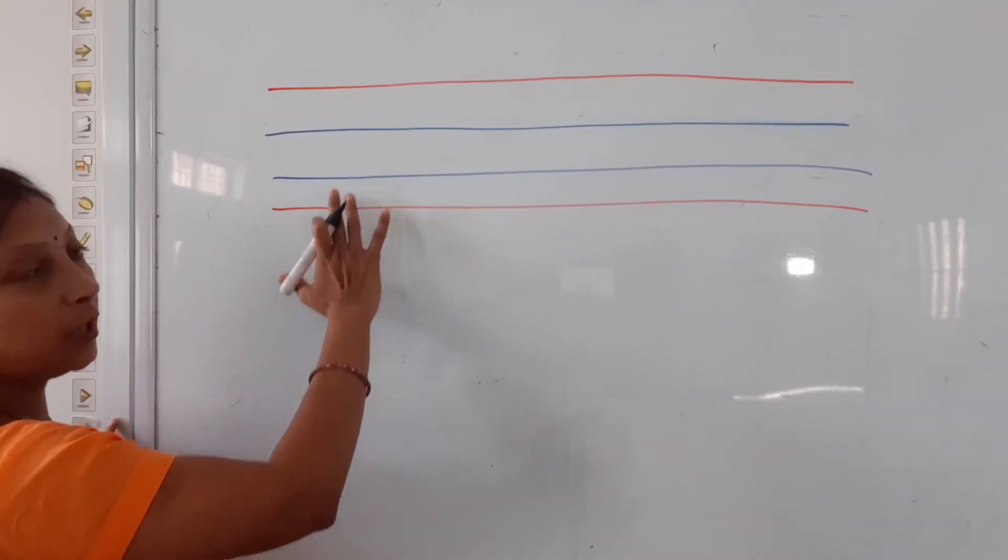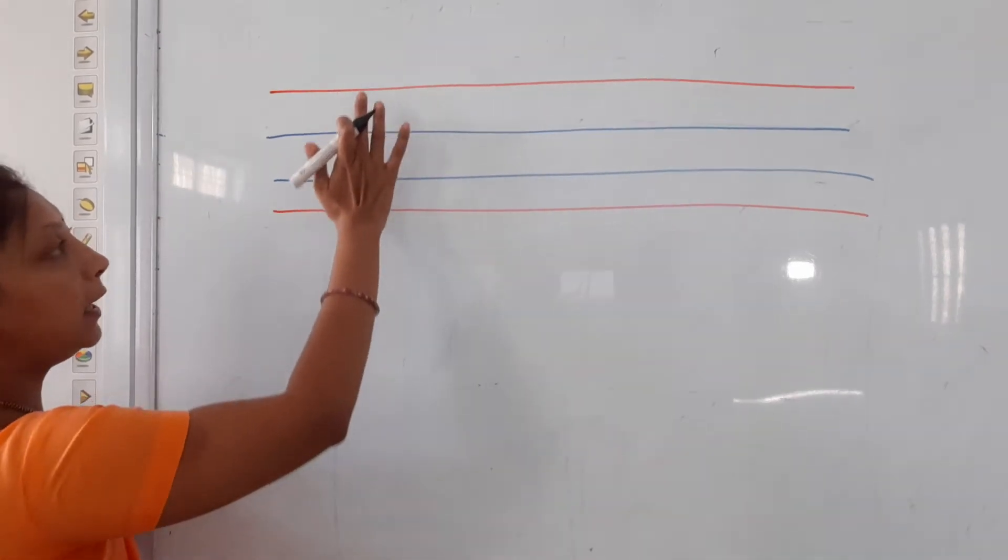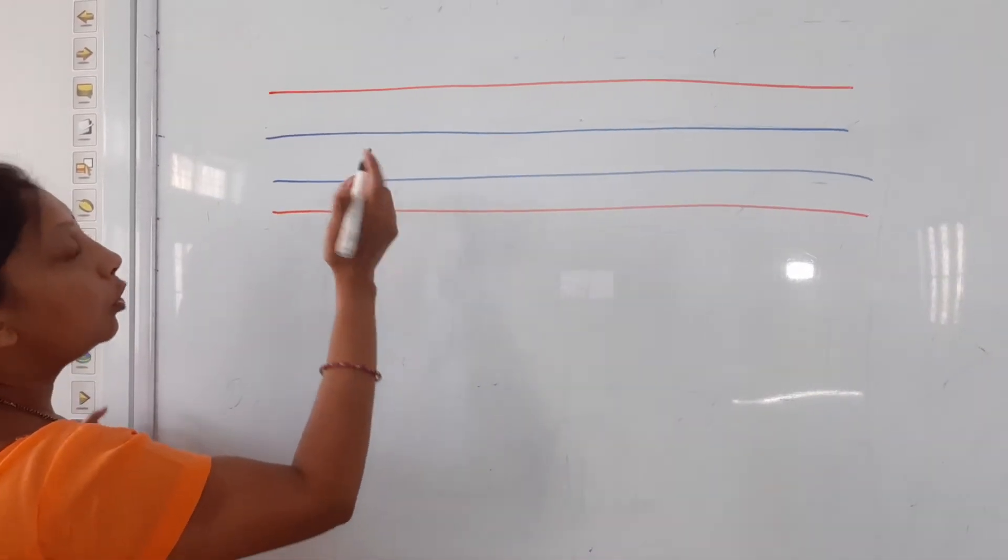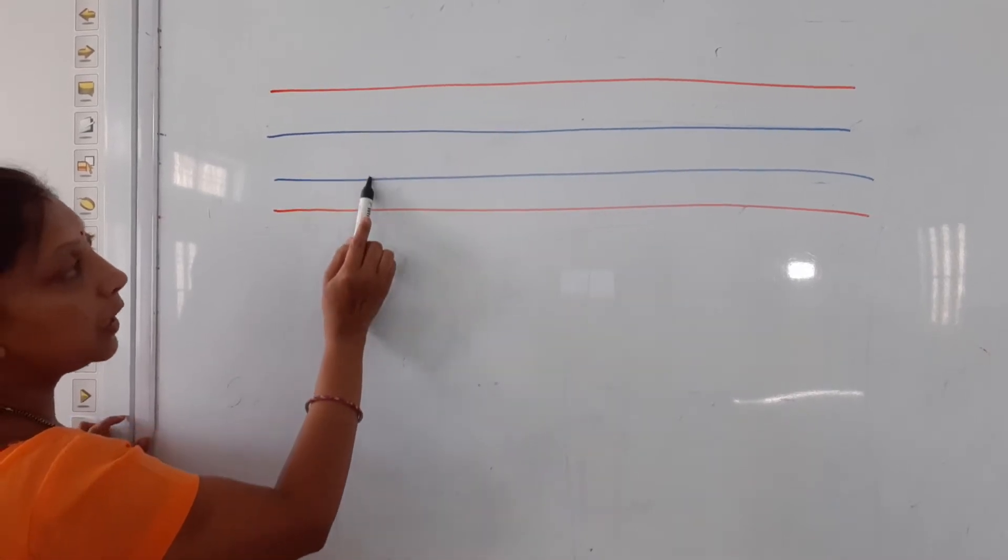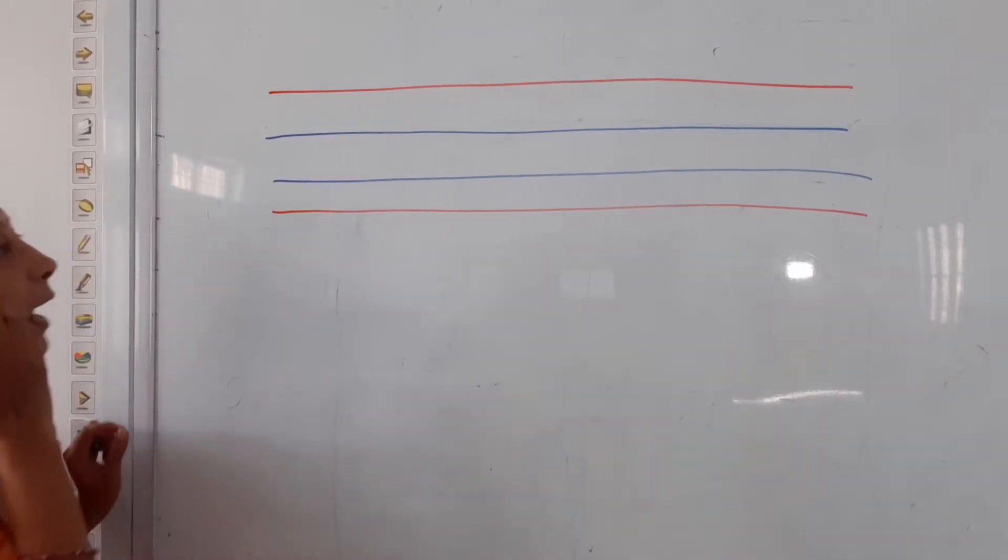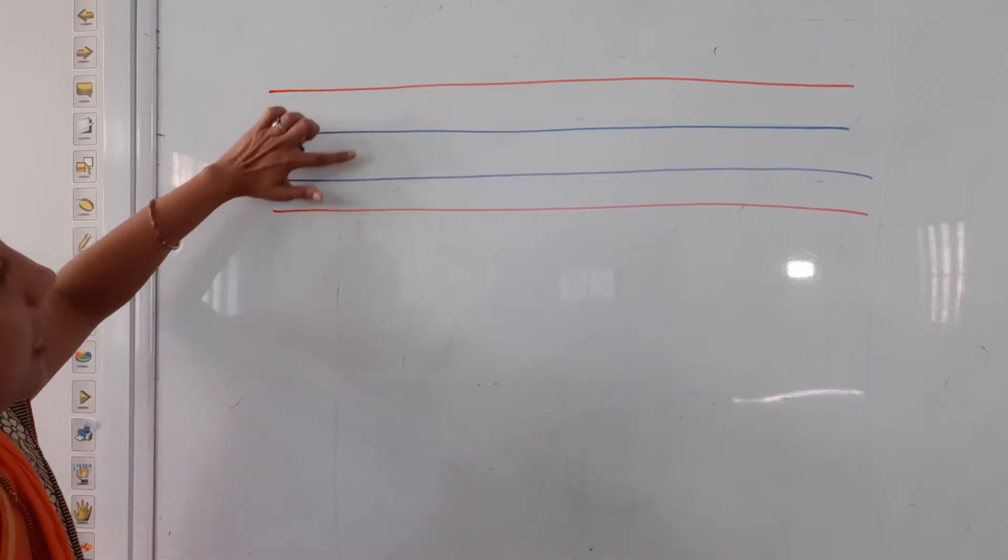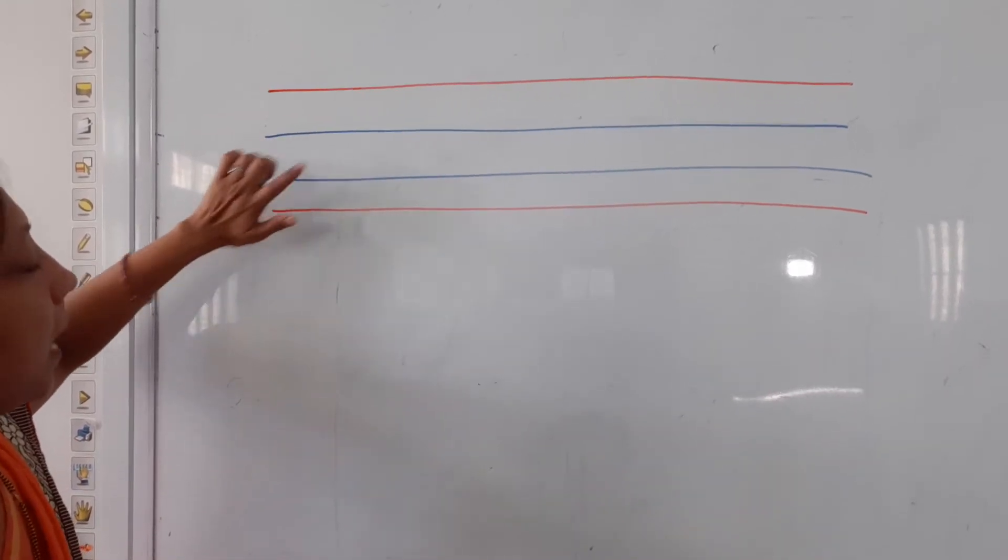1, 2, 3 and 4 lines. Okay, red line to blue line and last is red line. Now Cursive capital H will come in these 3 lines. Capital H, 3 lines width. You need 3 lines width.